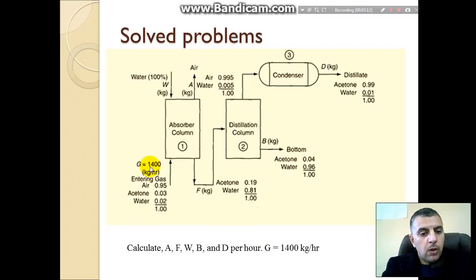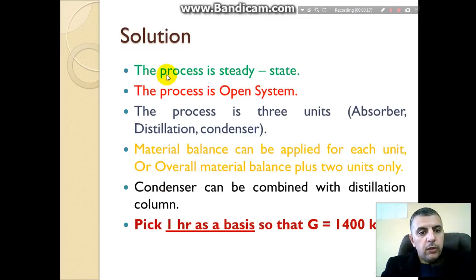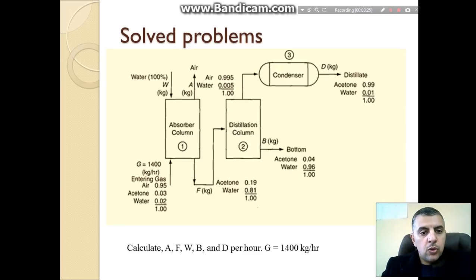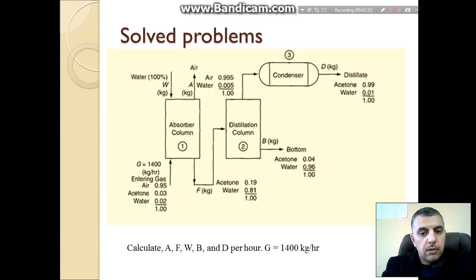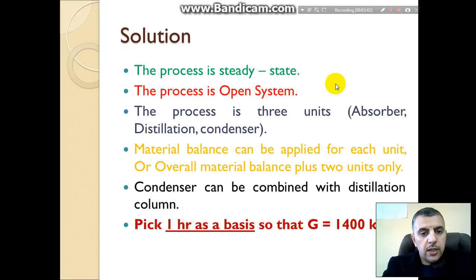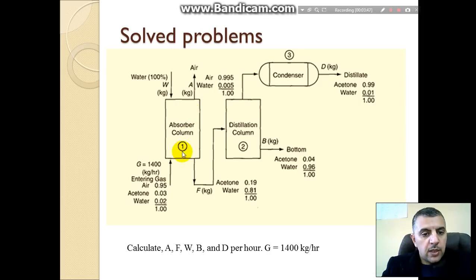The gas flow rate G is known to be 1400 kilograms per hour. The process is steady because there is no change in material with time. The process is open because there are streams crossing and leaving the system boundaries.